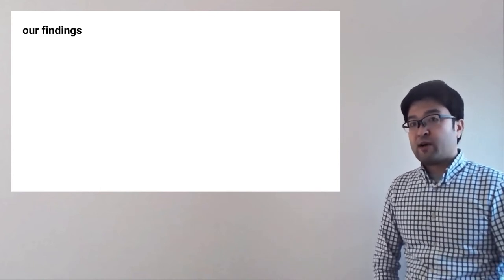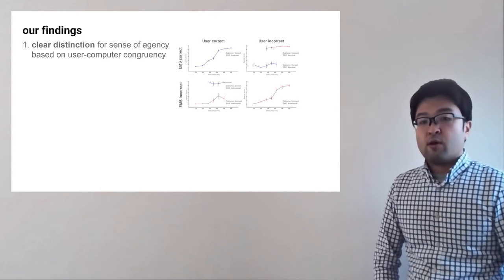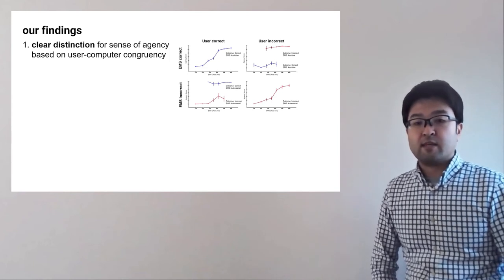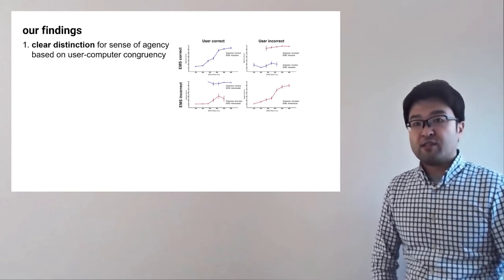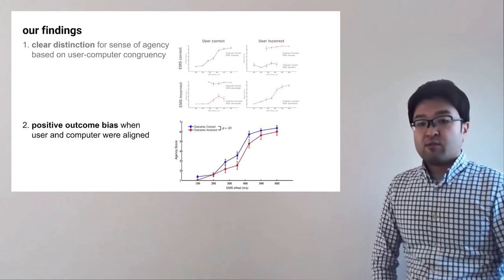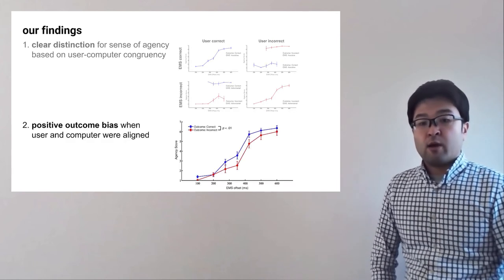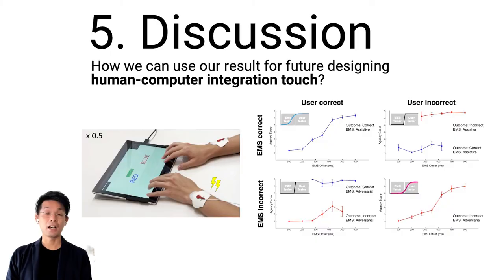Let's summarize our findings. We found two things. One is the clear distinction of a sensible agency based on the user-computer congruency. Second is the positive outcome biases when user and computer were aligned. I'd like to discuss how we can use our results for future designing human-computer integration touch.